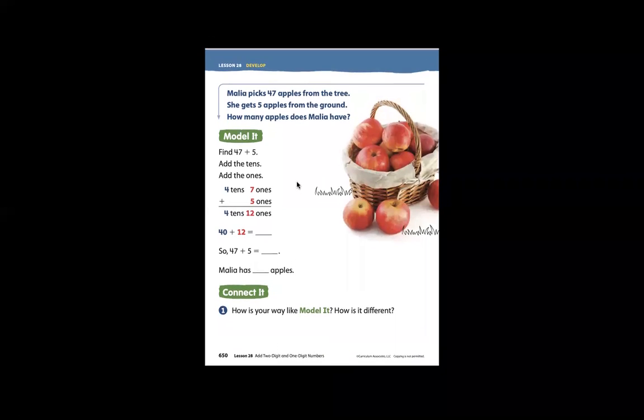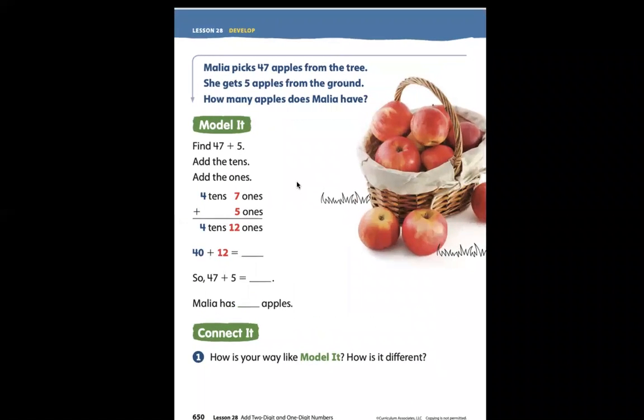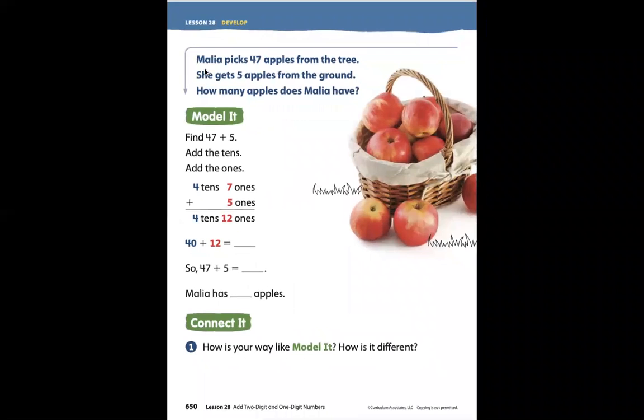Here it shows the same problem we were looking at previously. Malia picks 47 apples from the tree. She gets 5 apples from the ground. How many apples does Malia have? Model it.